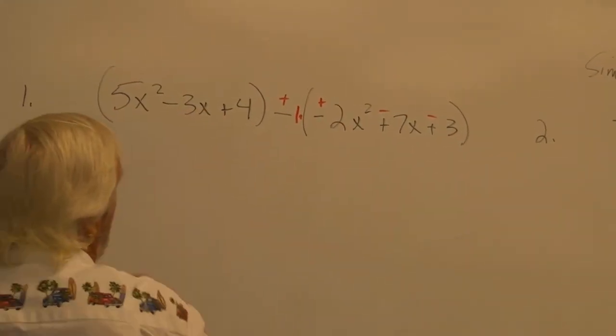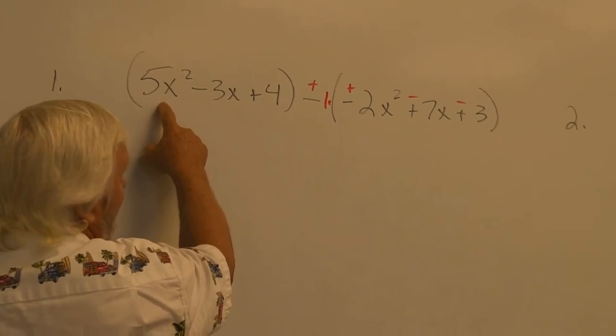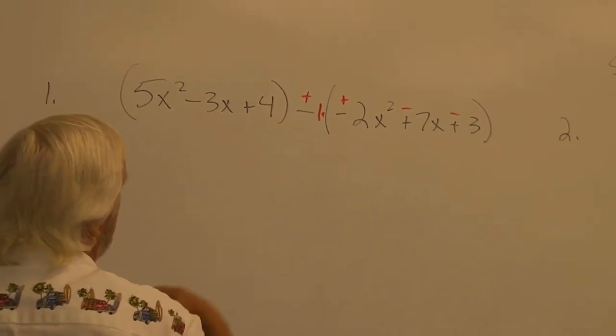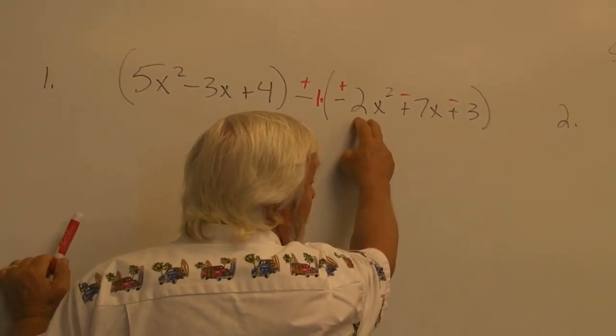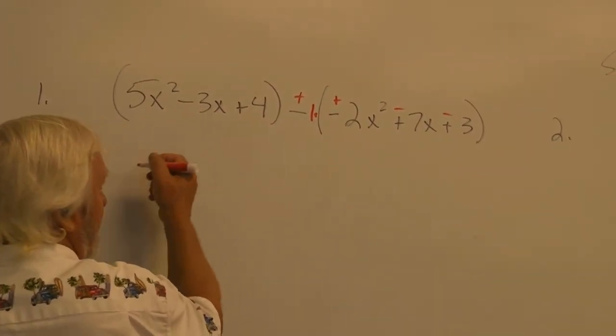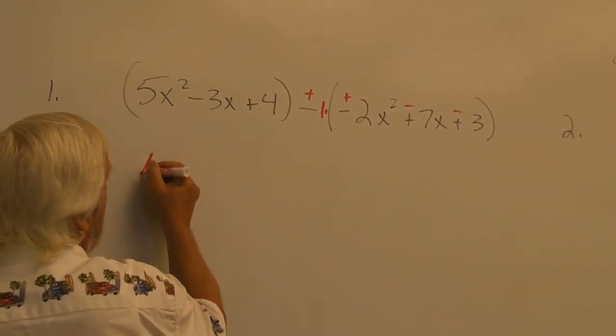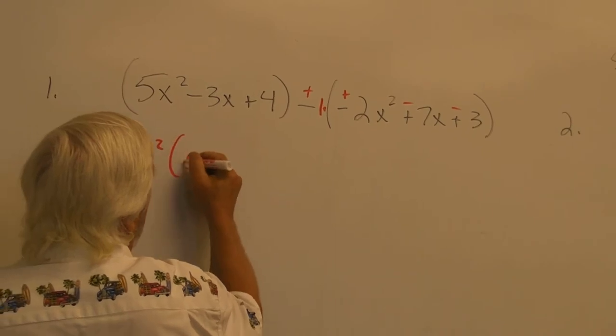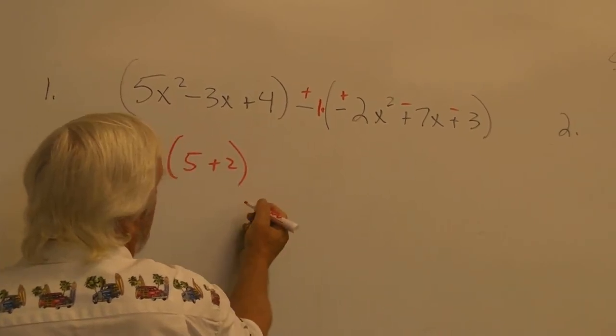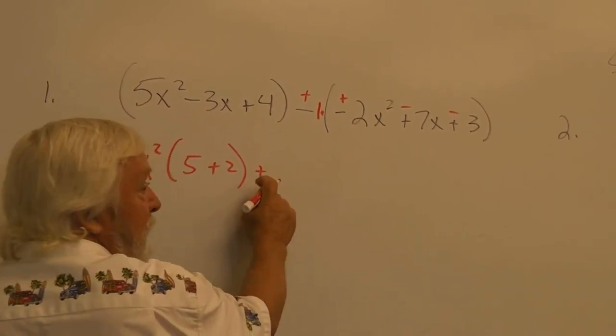Then remember that I have 5x squared and I have plus 2x squareds. Now, you can go directly to the fact that you have x squareds. You have a 5 plus 2. Always a plus sign.